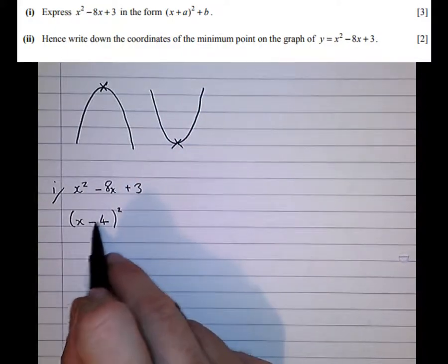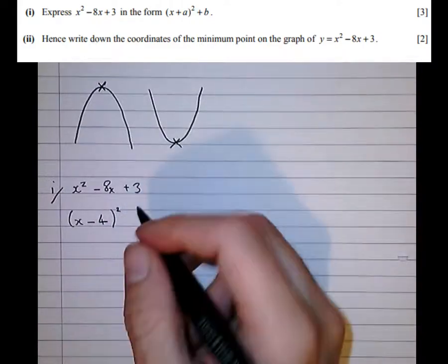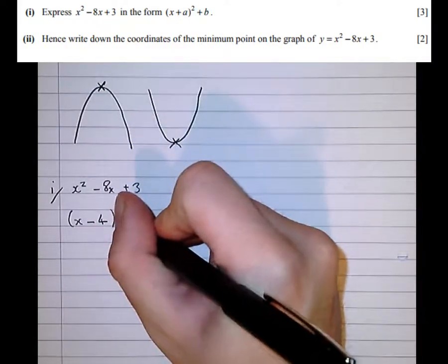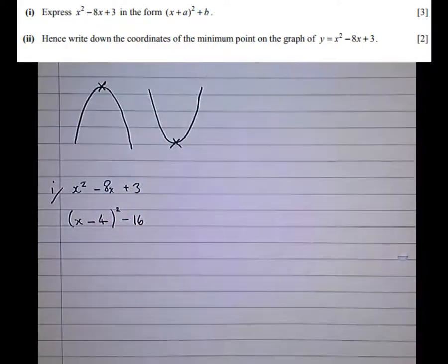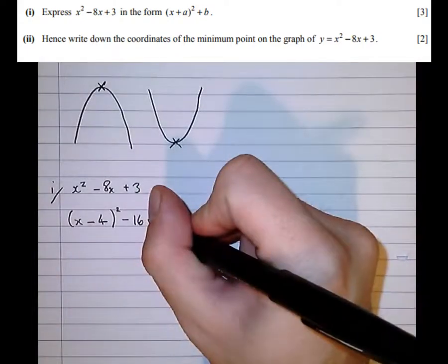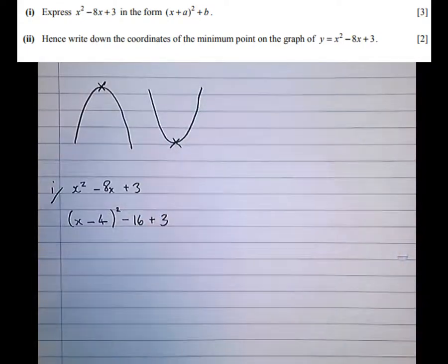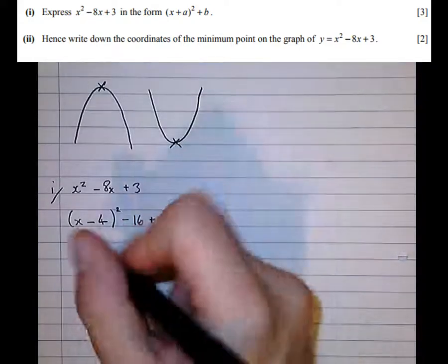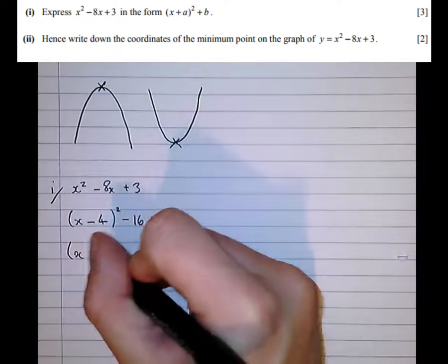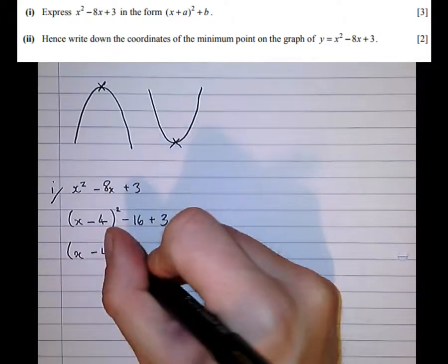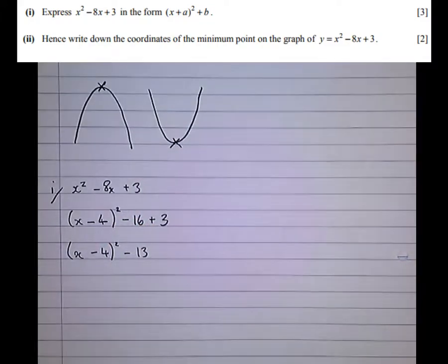When we multiply this out and square it we realize we've got an extra 16, therefore we want to take that extra 16 away at the end as we have in previous tutorials and there's a plus 3 added on the end. So simplifying that we get x minus 4 squared minus 13 and that's part 1 done.